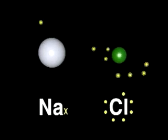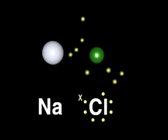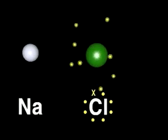If the atoms collide with sufficient energy, the chlorine atom will remove the electron from the sodium.